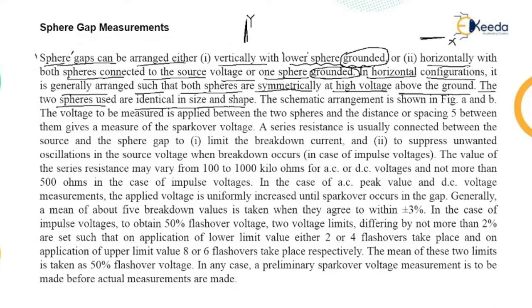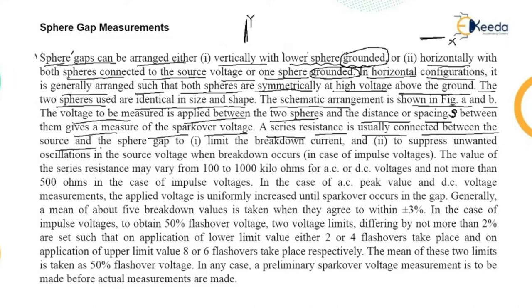Ground clearance is also important. The two spheres used are identical in size and shape — both should be mirror images of each other. The schematic arrangement uses two figures: figure A for vertical and figure B for horizontal. The voltage to be measured is applied between the two spheres, and the spacing denoted by S between them gives a measure of spark over voltage.